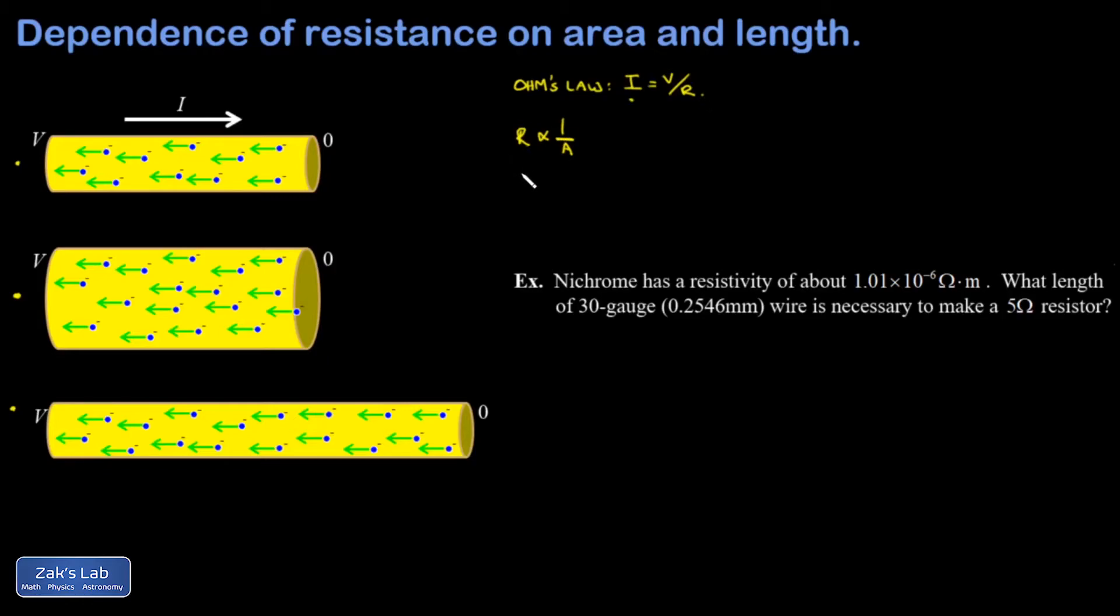We can put these two proportionalities into an equation, and there's a constant of proportionality given by the Greek letter rho, called the resistivity of the material. This is just a property of the material telling you how bad of a conductor the material really is. The bigger the resistivity, the more the resistance. A good conductor would have a very small resistivity.